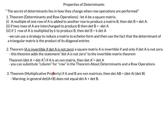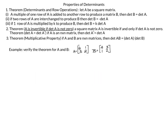The next theorem is the multiplicative property. If A and B are n-by-n matrices, then the determinant of AB equals the determinant of A times the determinant of B. There is a warning: in general, the determinant of A plus B does not equal determinant of A plus determinant of B. We only have this multiplicative property. The example will verify this theorem for A = [6, 3; 1, 2] and B = [4, 1; 3, 2].